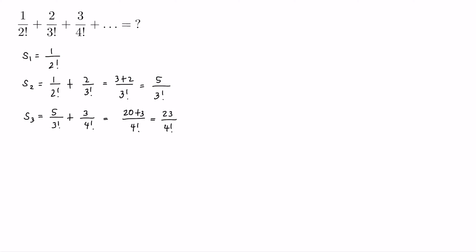So our guess is that the sum of the first n terms, S of n, is equal to — the denominator is (n+1) factorial and the numerator is just one less than this denominator — so (n+1) factorial minus 1, all over (n+1) factorial. Let us show that this is true for n in the set of natural numbers.